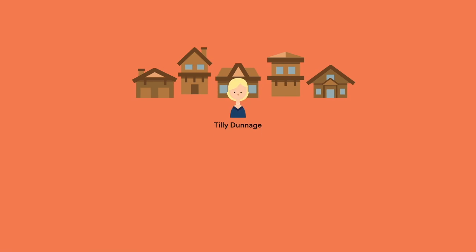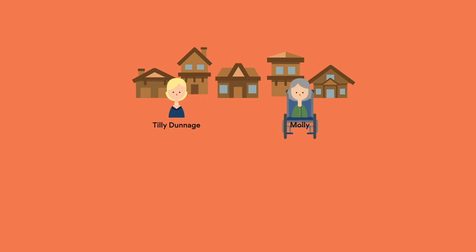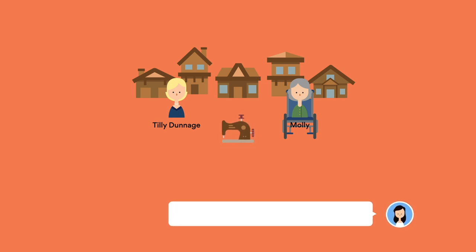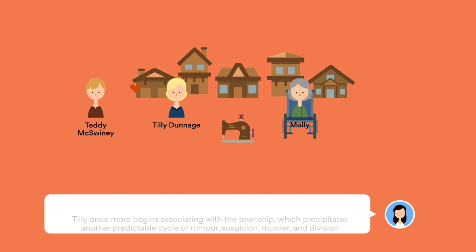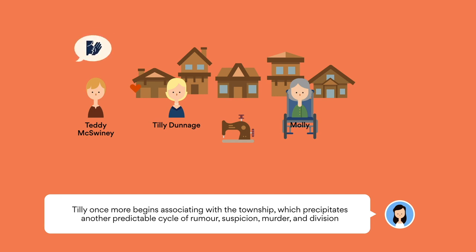Tilly occupies her time caring for her increasingly mentally and physically ill mother, whose house has fallen into disrepair. After cleaning the house, Tilly sets up her sewing machine once more — the most tangible expression of her affiliation with haute couture and fashion. Sparking an intimate friendship with Teddy McSweeney, the son of Dungatar's poorest family, Tilly once more begins associating with the township, which precipitates another predictable cycle of rumor, suspicion, murder, and division.